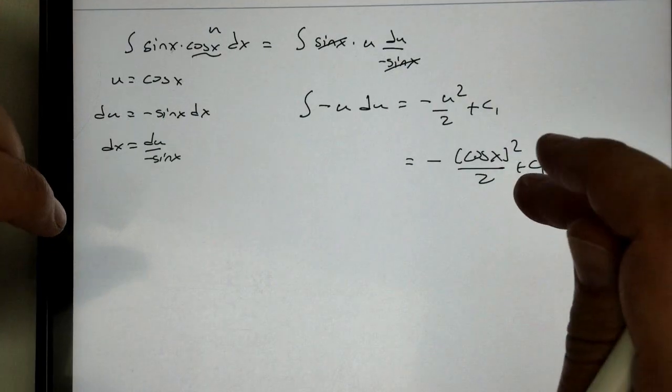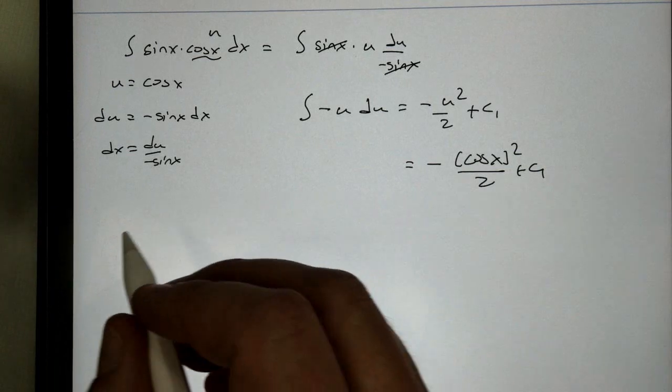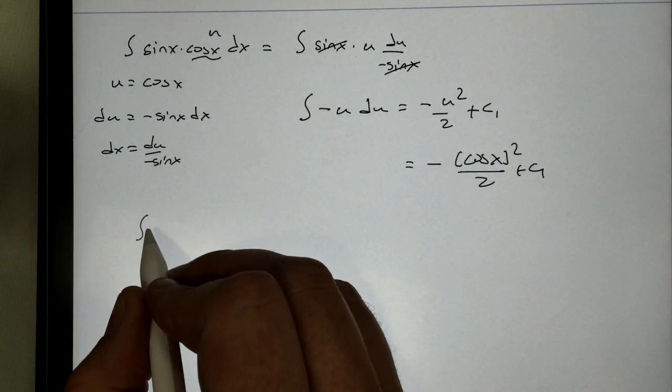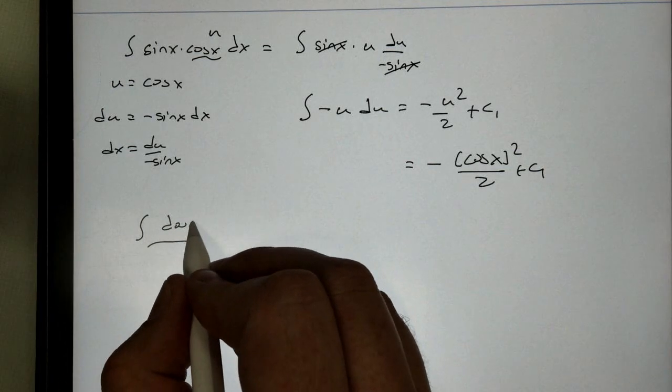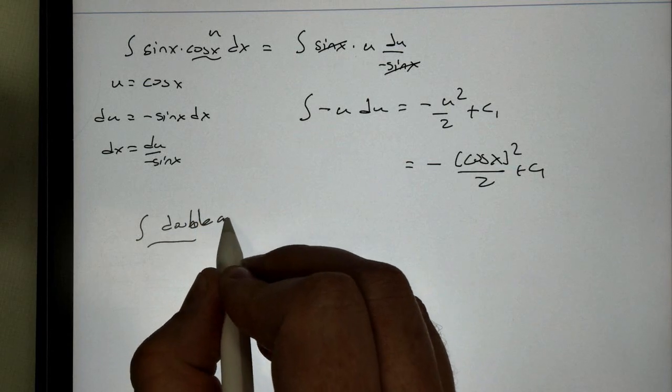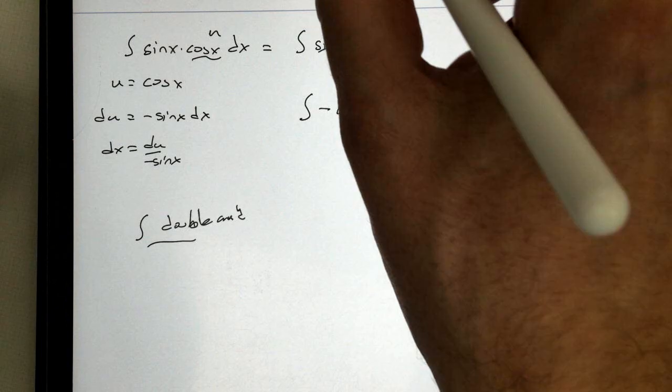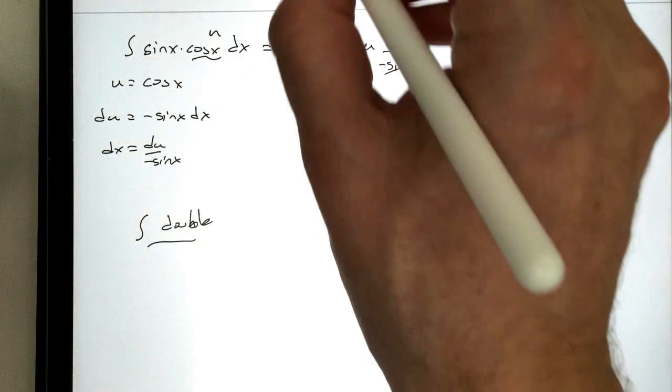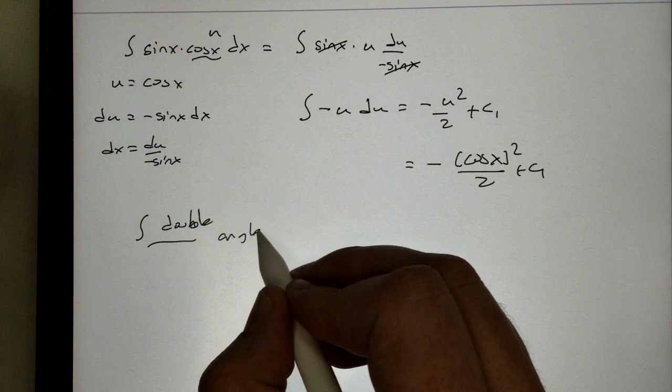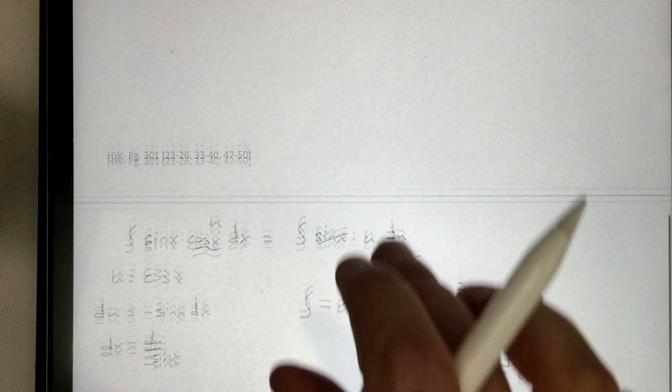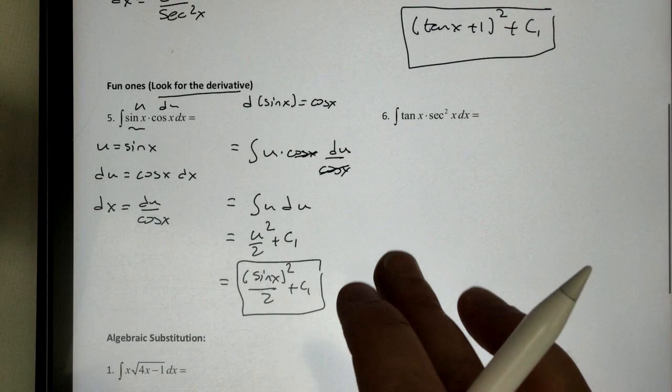All right. And there's even a third way to do it if you really hate yourself. You can use your double angle identity. But you can use double angle. And rewrite this. That's terrible looking. You can use your double angle and rewrite it. But we're not going to do that for this video. So let's take a look at the next one.